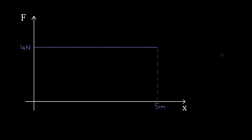If we were to plot what the force was on our hamburger as a function of its position, it would look something like this. If it started at zero and moved five meters to the right, and we exerted a constant force of four Newtons, that's why this is a horizontal line. It's horizontal — that means it was a constant amount of force. And the reason I'm doing this is because there's gonna be a geometrical significance to this work.